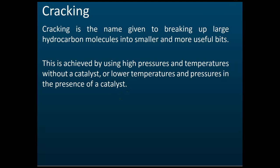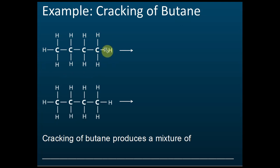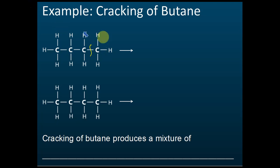Let's look at an example. We have butane, which has four carbons. If we heat this alkane at very high temperature and pressure, the carbon-carbon bonds — one or more of them — will be broken. Let's say it breaks here, and after breaking, it becomes two pieces.